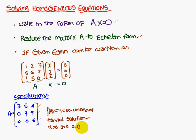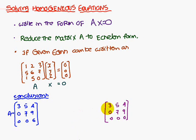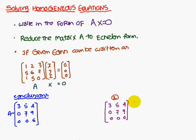If the matrix A has been reduced to a form where the rank of A is 2 — because there are only two non-zero rows — that is less than the number of unknowns, which is 3.